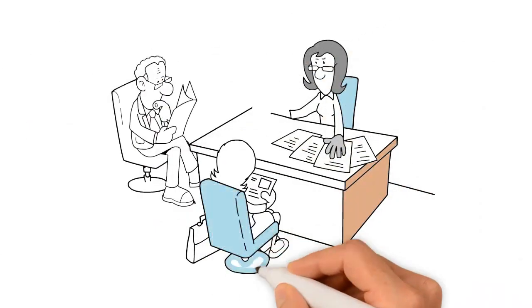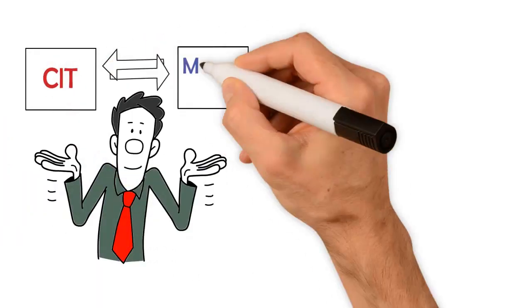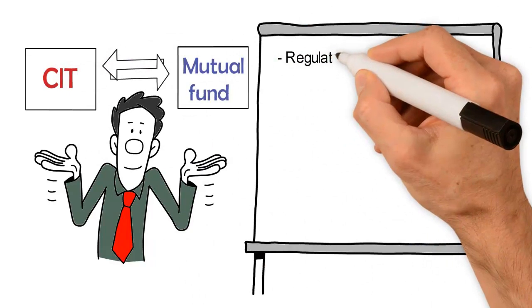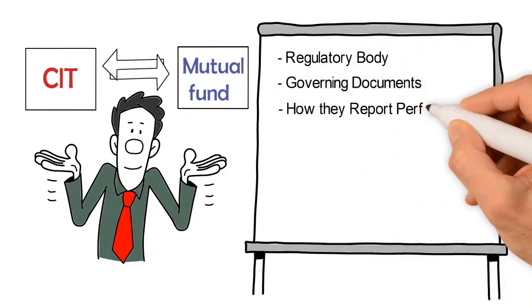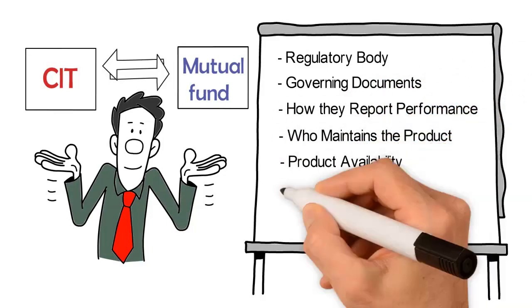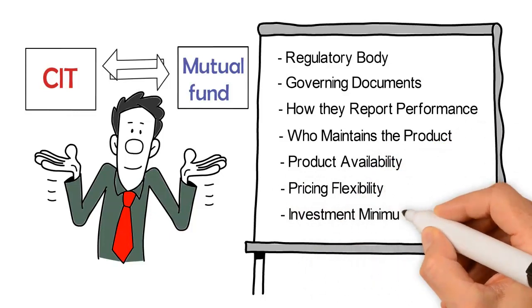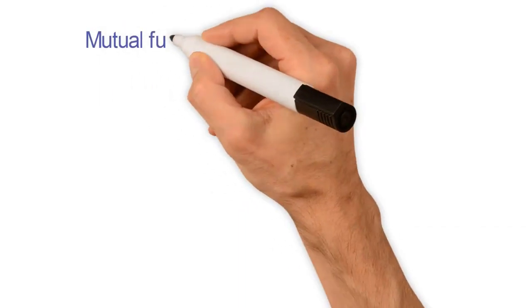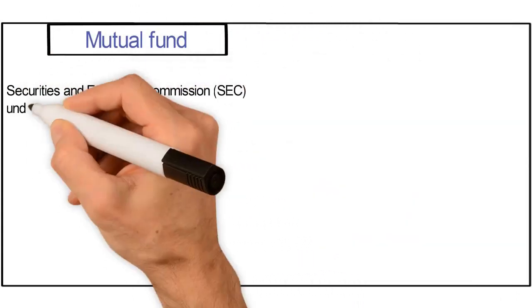Although they have many similarities, they have some distinct differences, some of which are driving the popularity of CITs. The main differences between a CIT and a mutual fund are: regulatory body, governing documents, how they report performance, who maintains the product, product availability, pricing flexibility, and investment minimums.